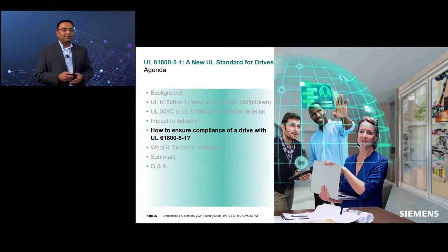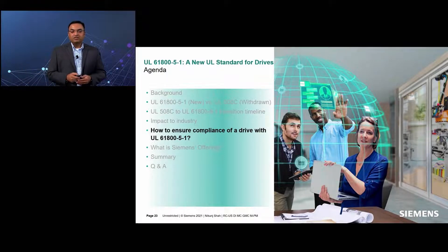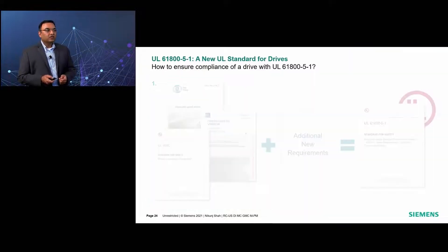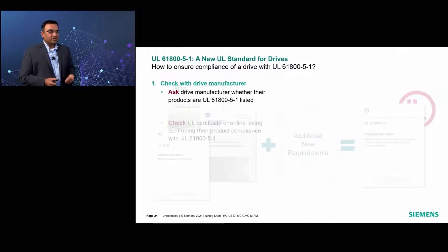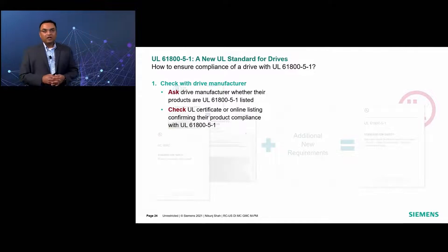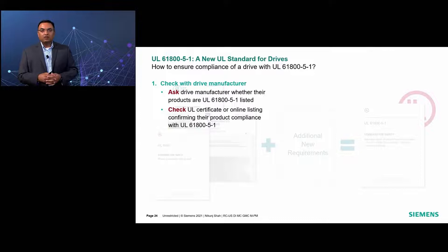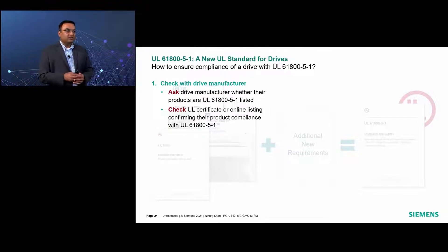Now, let us see how you can ensure the compliance of a drive with the UL 61800-5-1 standard, and how you can check that the drive you are using is really in compliance. There are three ways to check this. The first one is to check with the drive manufacturer — simply ask whether their drive products are UL 61800-5-1 listed, and check the UL certificate or online listing that confirms product compliance.